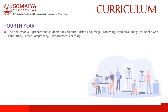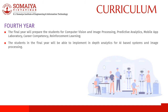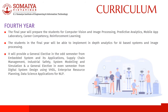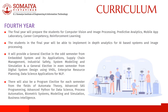Fourth Year: The final year prepares students in computer vision and image processing, predictive analytics, mobile app laboratory, career competency, and reinforcement learning, enabling them to implement in-depth analytics for AI-based systems and image processing. A general elective in the odd semester covers embedded systems and applications, supply chain management, industrial safety, electric vehicles, and system modeling and simulation. The even semester general elective covers digital system design using VHDL, advanced computer networks, enterprise resource planning, and data science applications for NLP. Program electives include automata theory, bioinformatics, advanced SAS programming, advanced Python for data science, process automation, expert systems, biometric systems, modeling and simulation, and business intelligence.